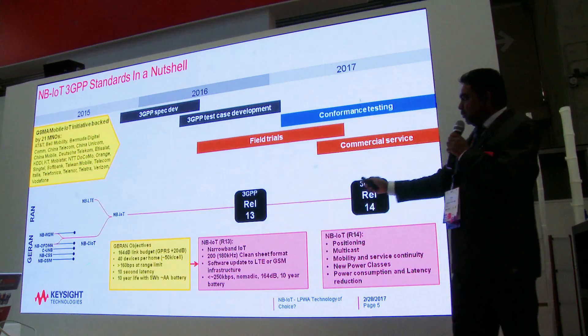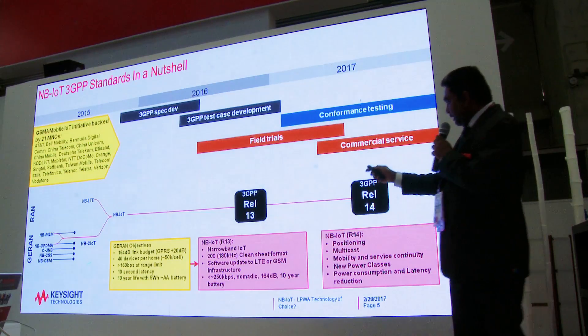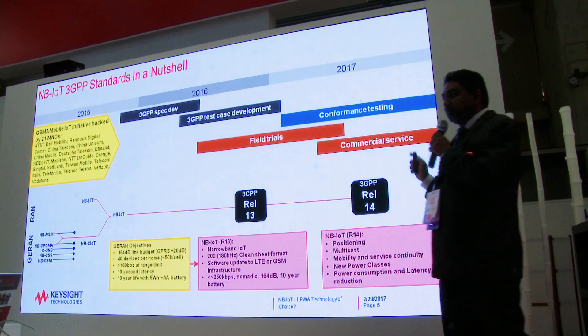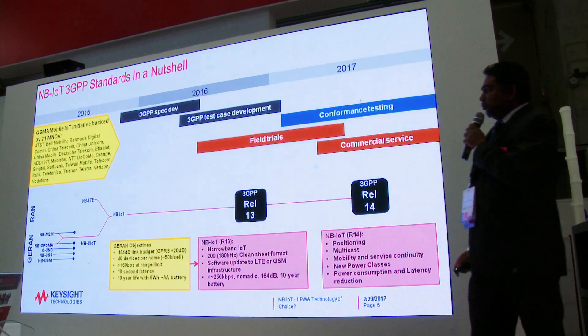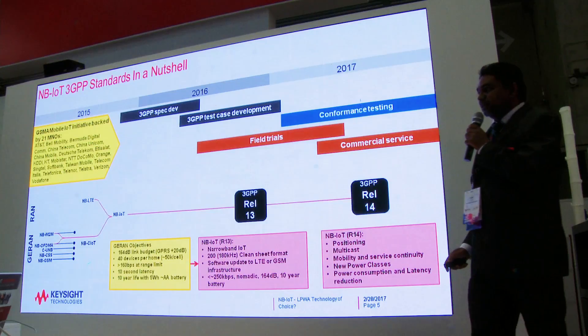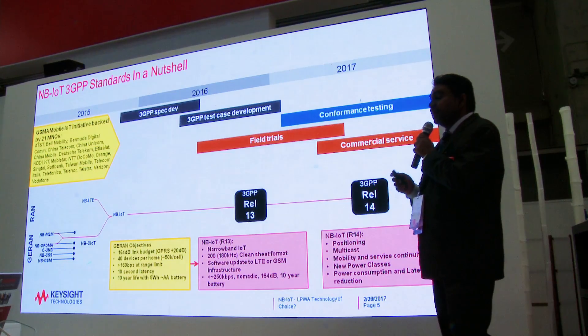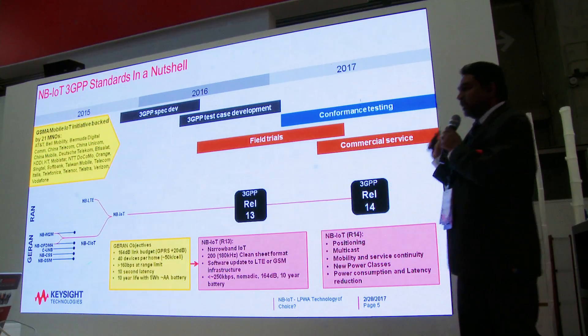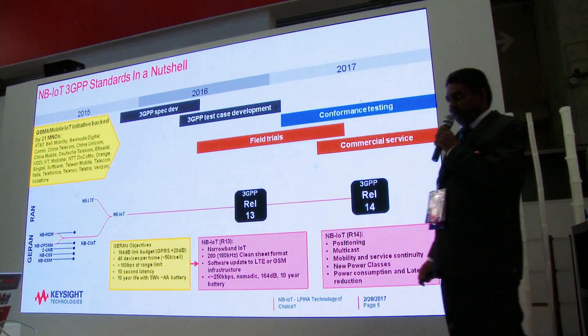Further evolution is happening in Release 14, where important features like positioning and multicast have been introduced. In terms of the timeline, the first 3GPP spec is completed, and conformance, system readiness, and field trials are nearing completion. Finally, commercialization is underway.